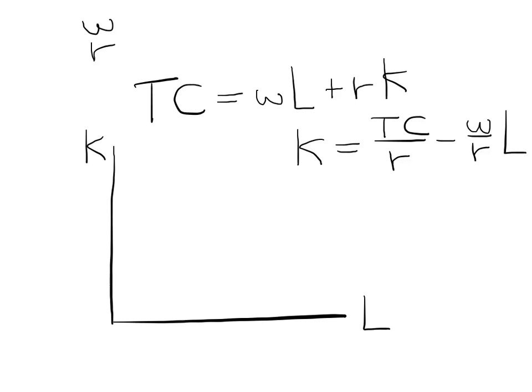This will give you all the combinations of capital and labor that you can purchase given particular values of wage, rent, and total cost. When you put it in the diagram, you'll end up with a line like this.